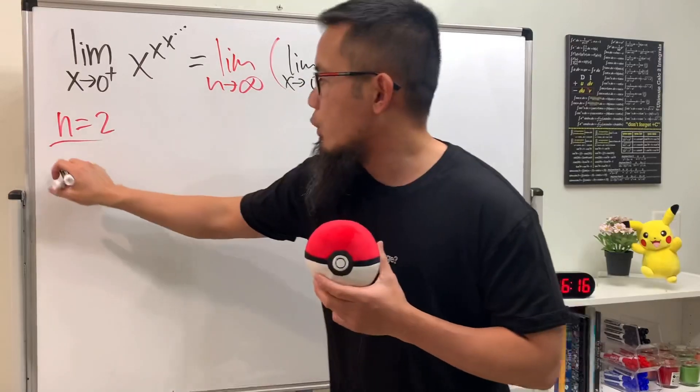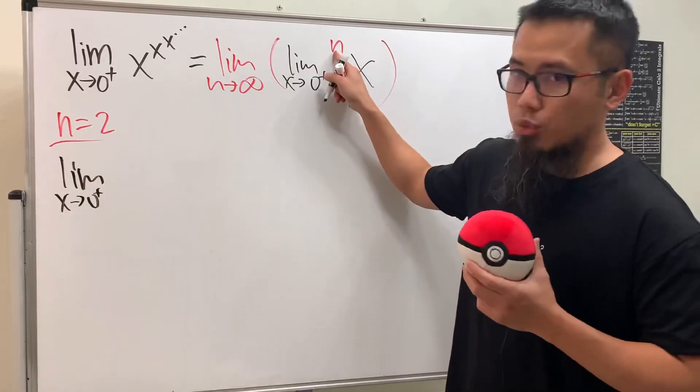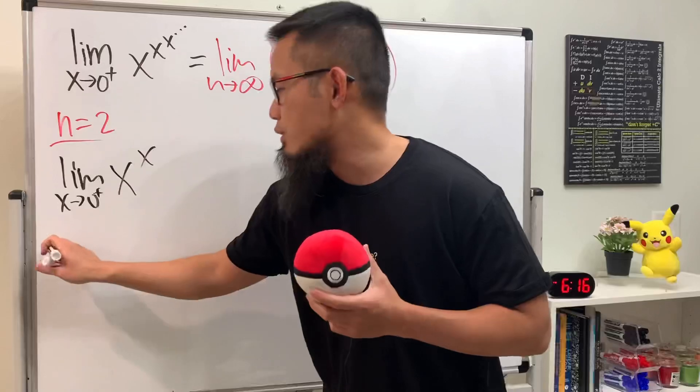We look at the limit as x goes to zero plus with 2 levels - that means x to the x power. This is really famous; the answer is equal to 1.